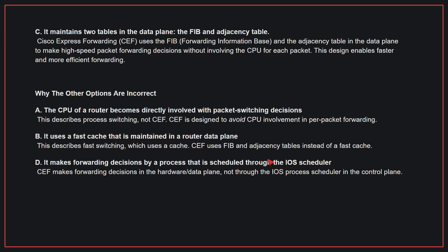Why the other options are incorrect? A: This describes process switching, not CEF — CEF is designed to avoid CPU involvement in per-packet forwarding. B: This describes fast switching, which uses a cache; CEF uses FIB and adjacency tables instead of a fast cache. D: CEF makes forwarding decisions in the hardware or data plane, not through the IOS process scheduler in the control plane. Therefore, the correct answer is C.